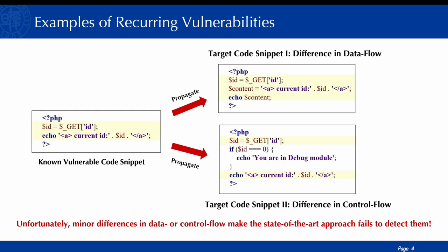It's worth noting that when known vulnerable code propagates to another application, there may be changes in the implementation of data flow or control flow to accommodate the current development requirements. Unfortunately, the state-of-the-art technique HiddenCPG, which targets PHP web applications, fails to detect these recurring vulnerabilities due to its structured matching strategy that cannot tolerate such code differences.